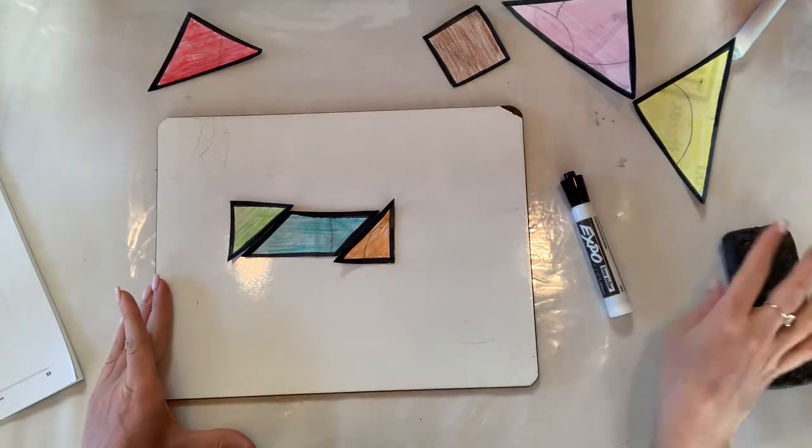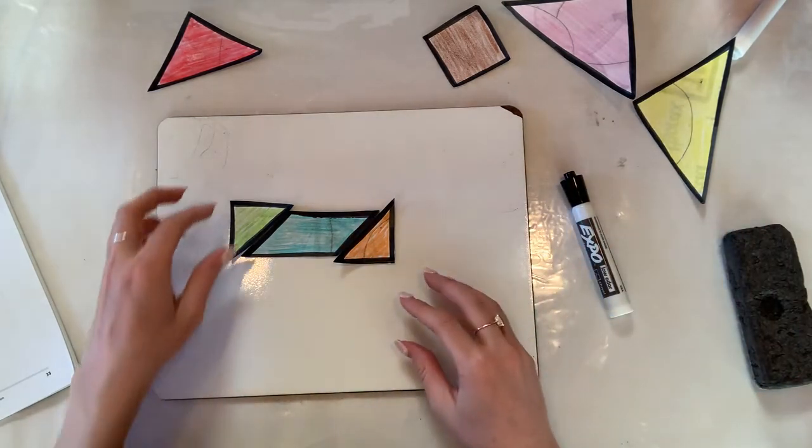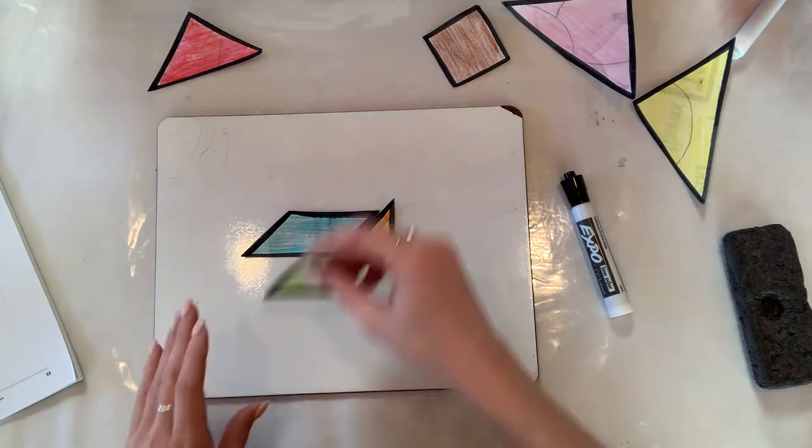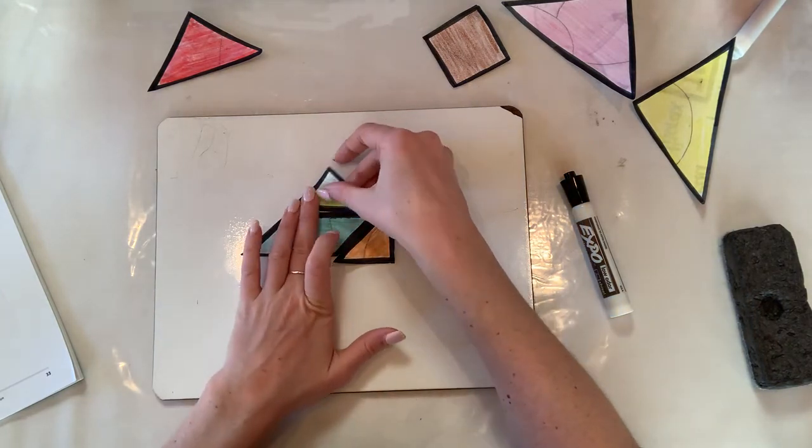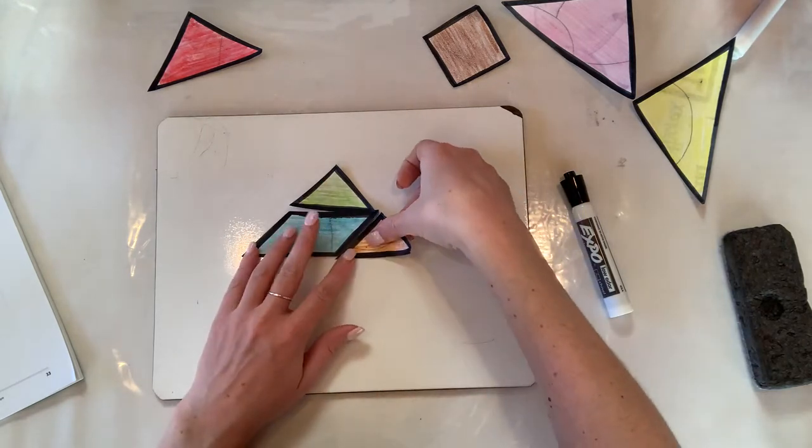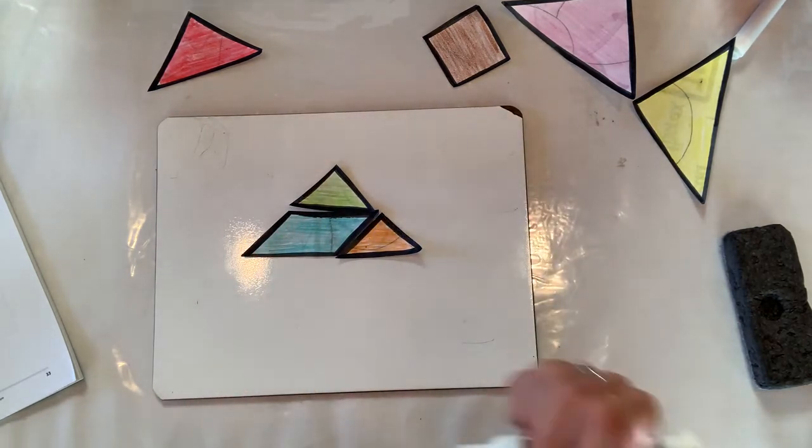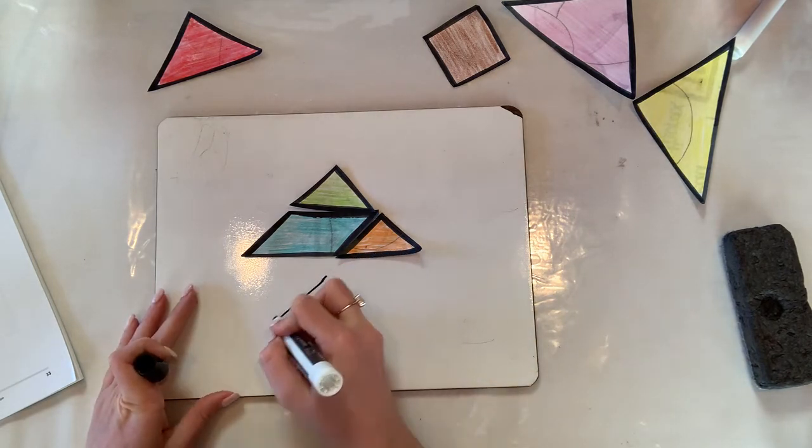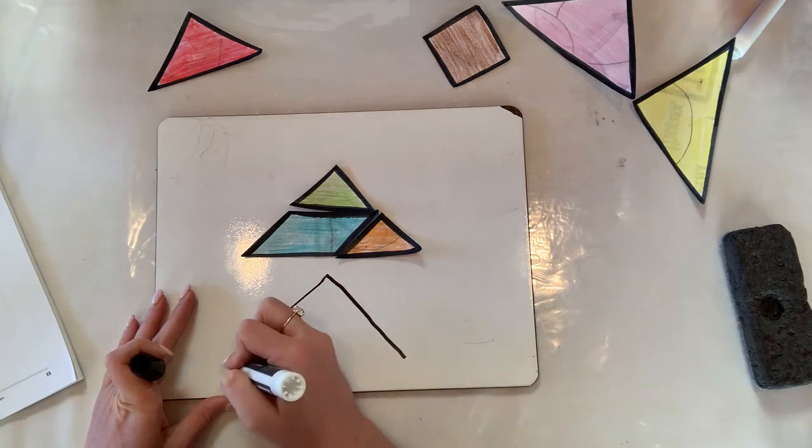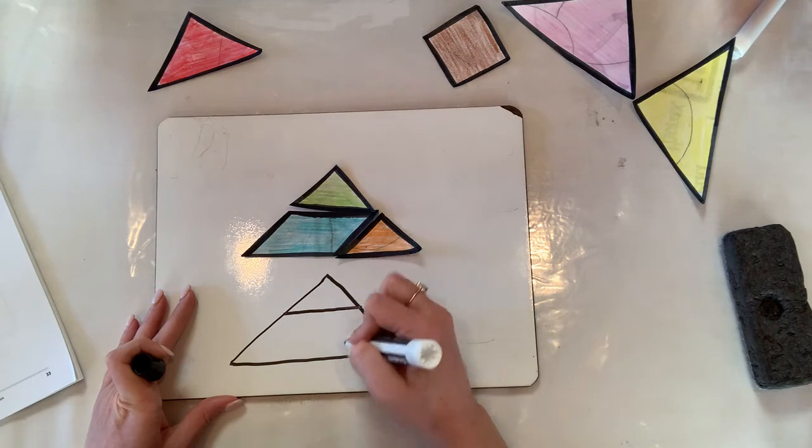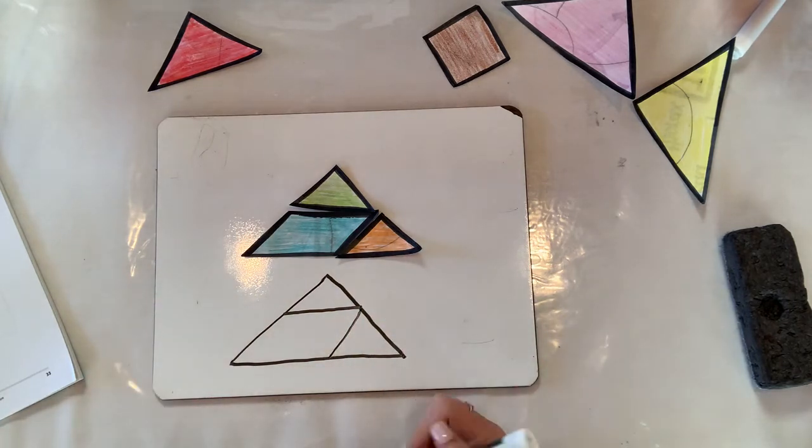And then the last one here says we need to make a triangle with one square corner. So let's see. I bet if we go like that, that could be my square corner up there. Then down here, we could go like that. So to make that, all I would do go like this and then make my parallelogram. Great job.